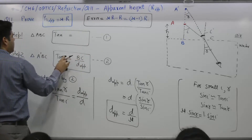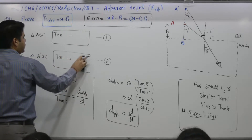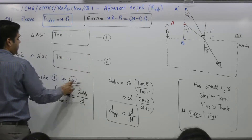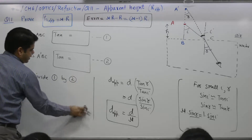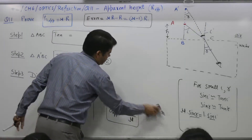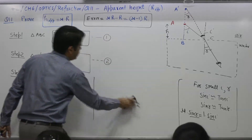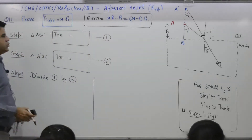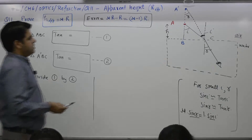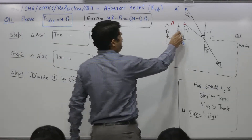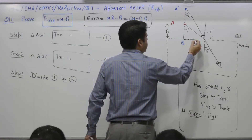Write the tangent of the relevant angle for each triangle, then divide one by the other. Try for one minute — one full page for triangle ABC. Note that part BC is common to both triangles.